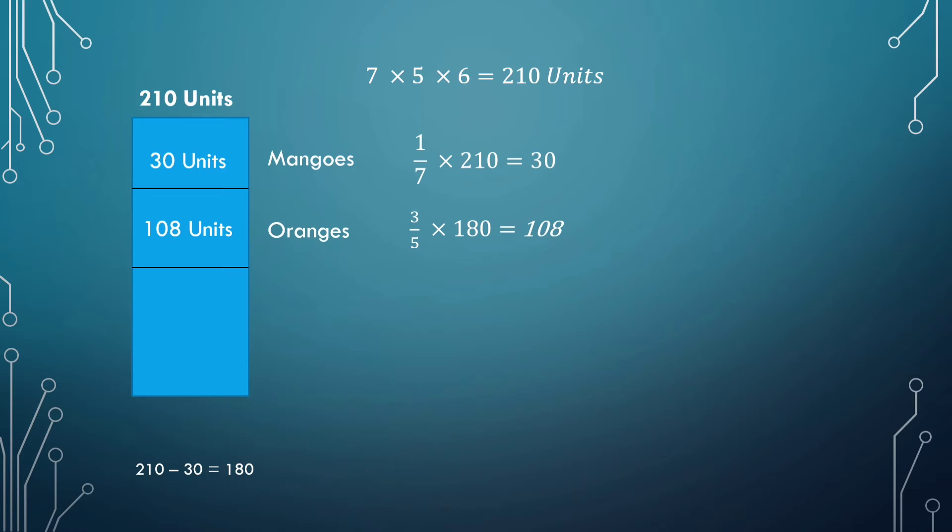The remaining amount of units would be the sum of the units that we already found. That is 108 plus 30, which is a total of 138 units. And the total amount represented in that box is 210 units. So when I subtract 138 from the 210, that would leave me with 72 units.